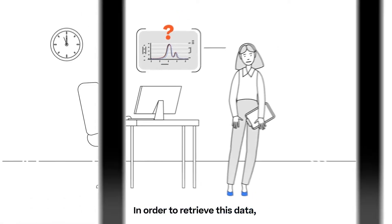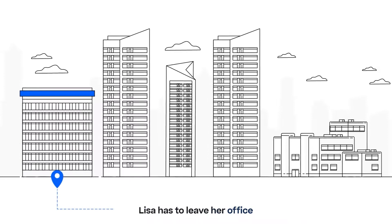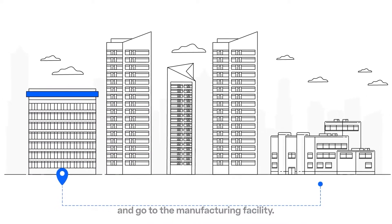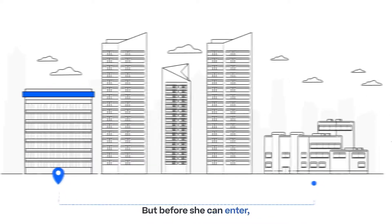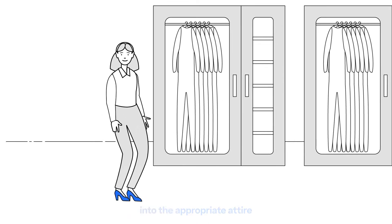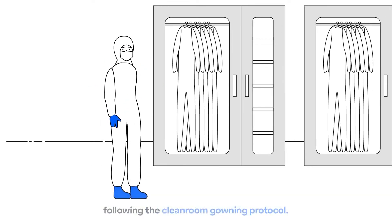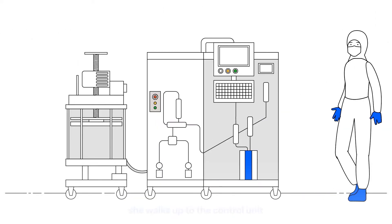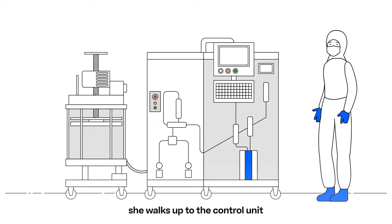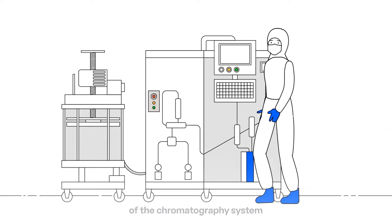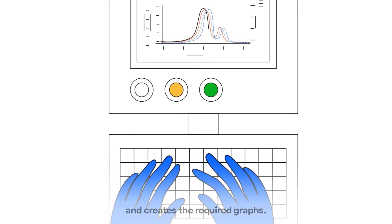In order to retrieve this data, Lisa has to leave her office and go to the manufacturing facility. But before she can enter, she needs to change into the appropriate attire following the clean room gowning protocol. In the clean room, she walks up to the control unit of the chromatography system and creates the required graphs.